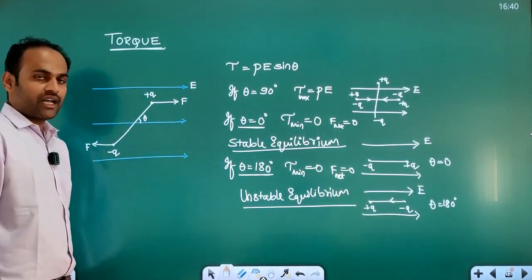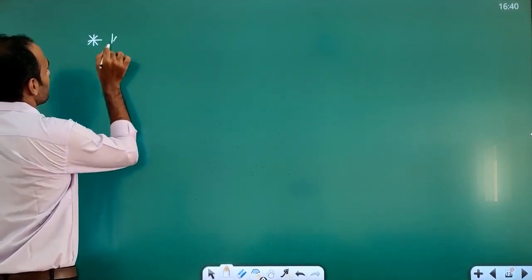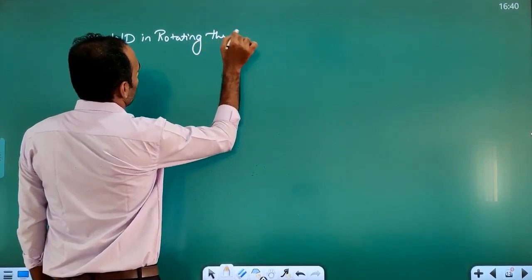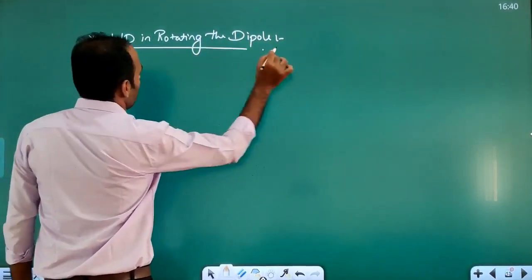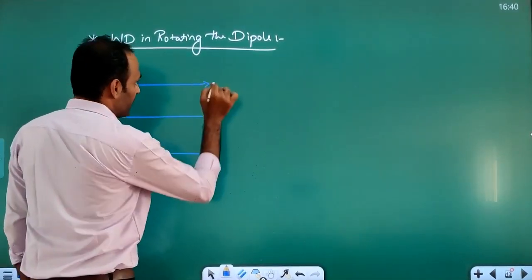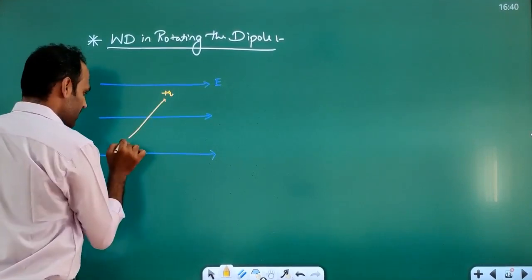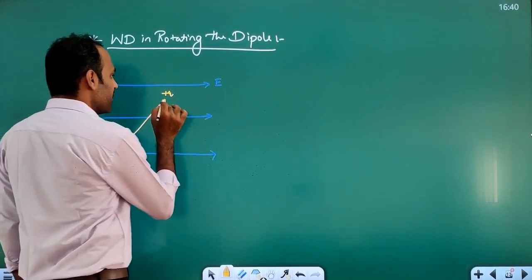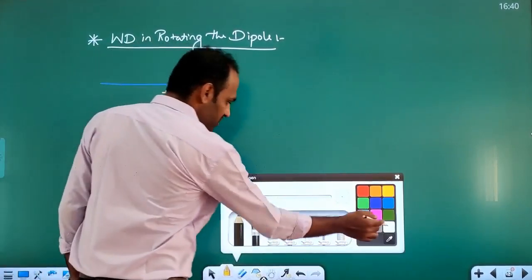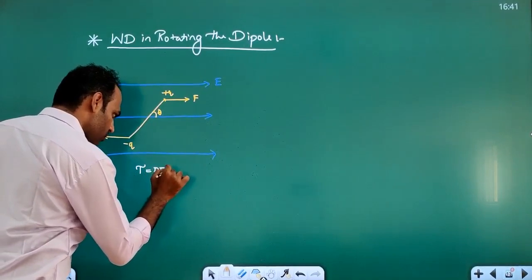Now let us discuss the work done in rotating the dipole. We have a uniform electric field and a dipole placed at an angle theta with respect to the field. There will be forces acting in opposite directions on the charges, causing the dipole to rotate clockwise due to the torque from the electric field, which equals PE sin theta. If you want to rotate the dipole in the reverse direction, work needs to be done against this torque.